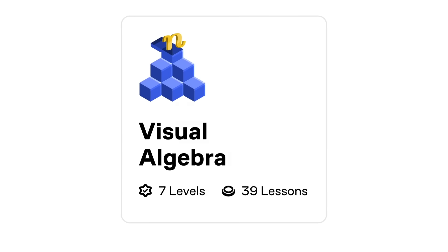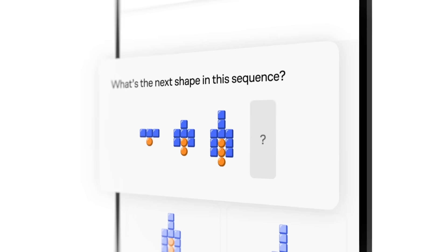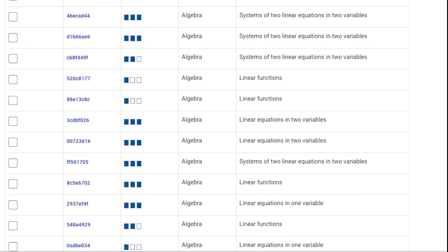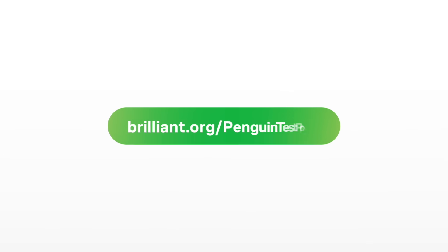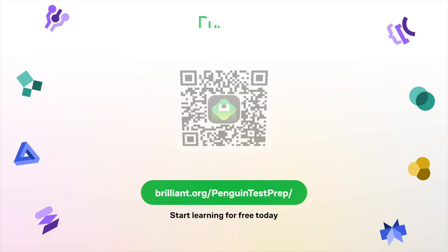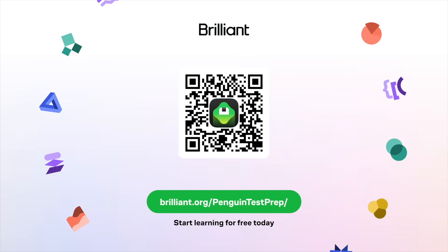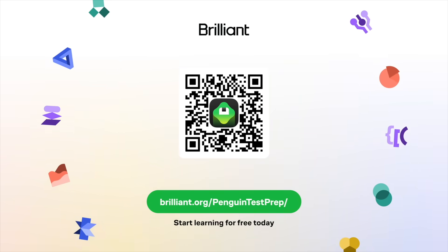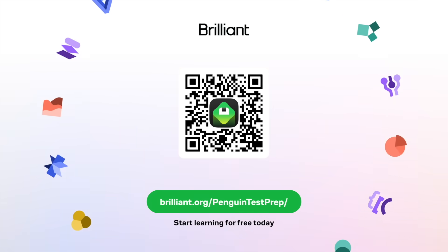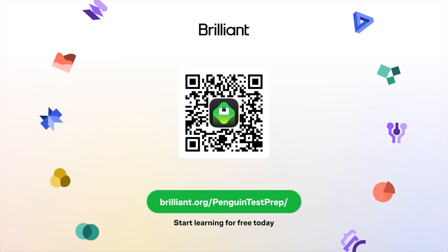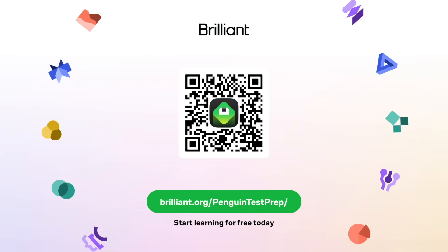Right now, I'm working through their visual algebra course, and it completely reframes the way you think about algebra. You know, the kind of math that makes up 70% of the SAT math section. You can start learning for free at brilliant.org slash penguin test prep, or click the link in the description. And if you enjoy the platform, that link's also going to get you 20% off a premium annual subscription, which includes unlimited daily access to everything Brilliant has to offer.